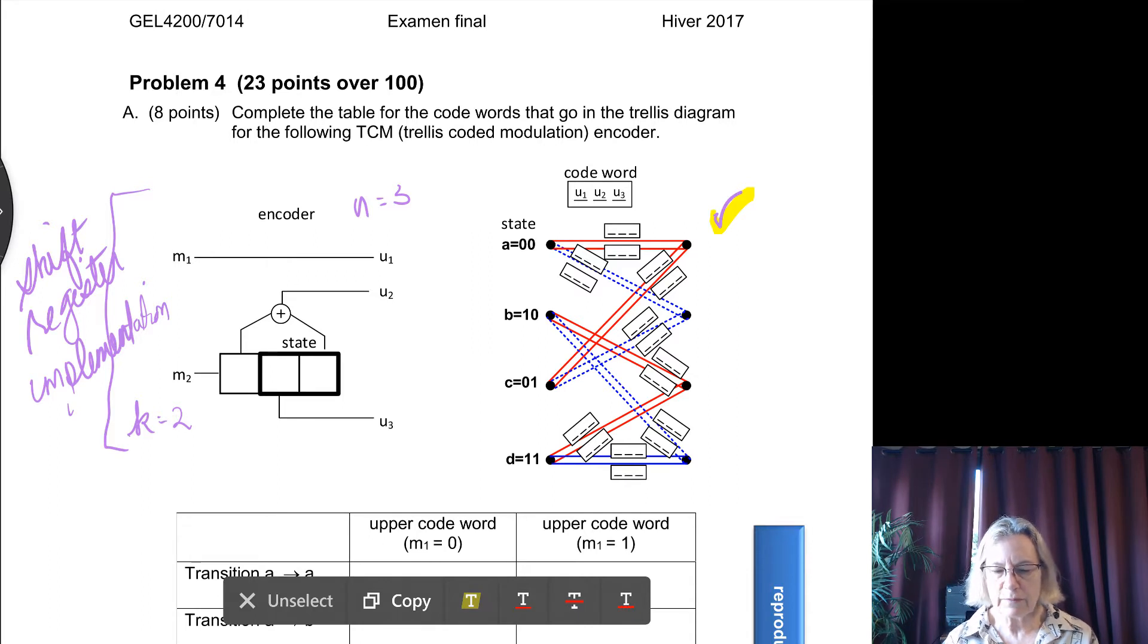We can see that when we complete this trellis, we're supposed to use the code words. We're supposed to assign it that the first slot is the U1 bit, the second slot is the U2 bit, and the third slot is the U3 bit. So each code word has three bits.